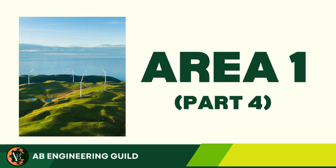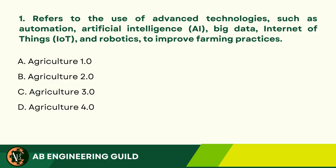Area 1, Part 4. Question 1: Refers to the use of advanced technologies, such as automation, artificial intelligence (AI), big data, Internet of Things (IoT), and robotics, to improve farming practices. A. Agriculture 1.0. B. Agriculture 2.0. C. Agriculture 3.0. D. Agriculture 4.0.